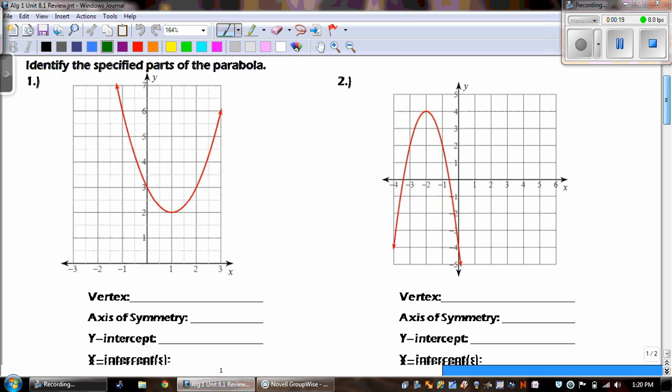Number one says to identify the specified parts of the parabola. So let's take a look. What's the vertex? Remember that the vertex is the middle part of your graph. In this situation, our vertex is at that point, and that is the point. Now, it's not two. Look at the key right there. So this vertex is at the point (1, 2).